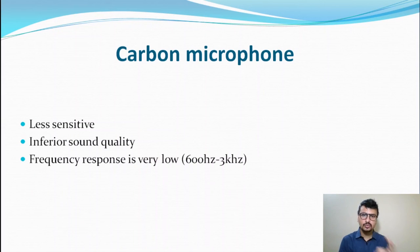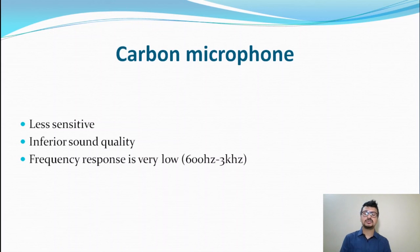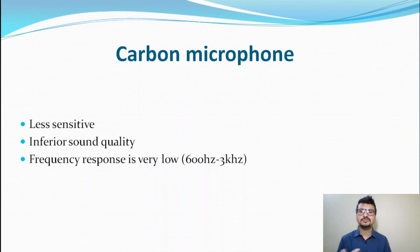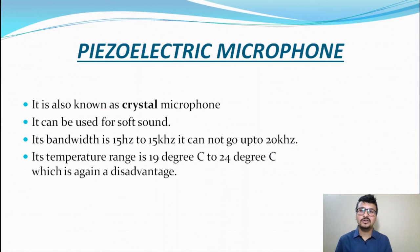The carbon microphone has less sensitivity and inferior sound quality. Its frequency response is very low — it ranges from 600 Hz to a maximum of 3 kHz. Despite this low frequency response and inferior sound quality, these microphones are still used by people.